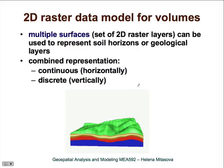We can have a two-dimensional raster model used for volume representation using multiple surfaces. Essentially, you can have a set of 2D raster layers representing, for example, soil horizons or geological layers. These are discrete vertically — the same value for one layer, another value for the next — but continuous horizontally, with values changing slowly. This would be a hybrid three-dimensional or volume representation.